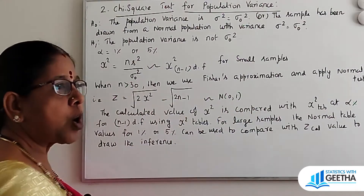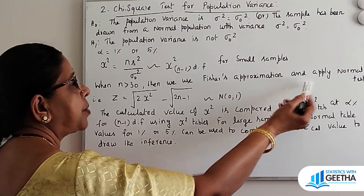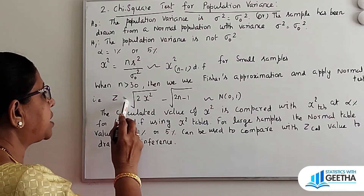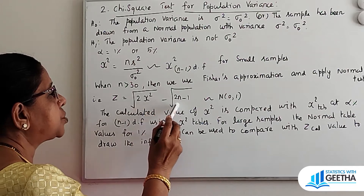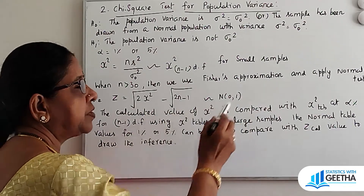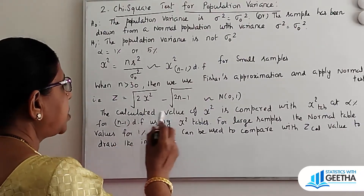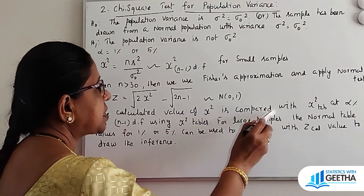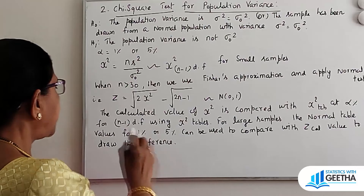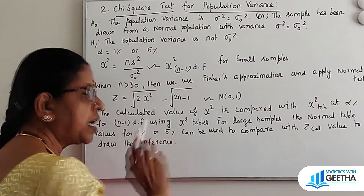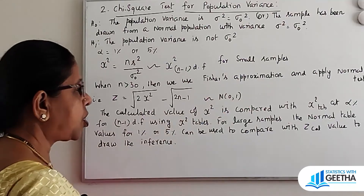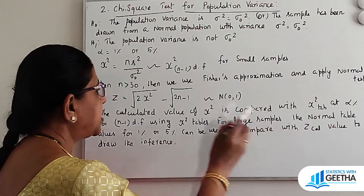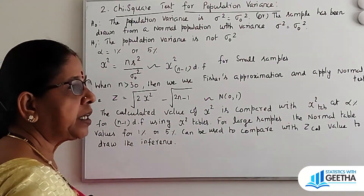When N is greater than 30, that is for large samples, we use Fischer's approximation and apply the normal test. In that case, the calculated Z value is given by the formula: root of 2 chi-square minus root of 2N minus 1, which follows normal with mean 0 and variance 1. For large samples, the normal table values for 1% or 5% are used to compare with the calculated Z value to draw the inference.